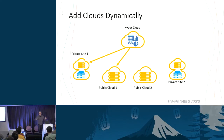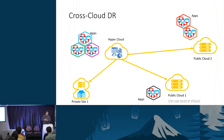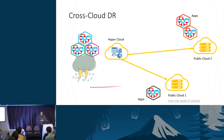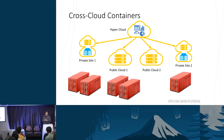Add clouds dynamically: you want to extend your hypercloud while it's running, adding more sites — public or private. You may also want to remove a site, for example moving from AWS to Azure because of price. Cross-cloud disaster recovery: if some calamity destroys one of your private sites, you want to move the workload to your disaster recovery public sites.